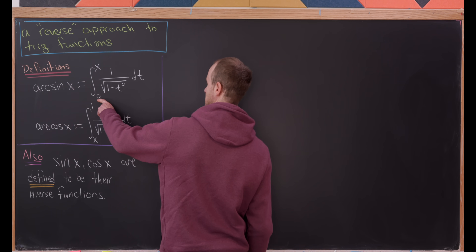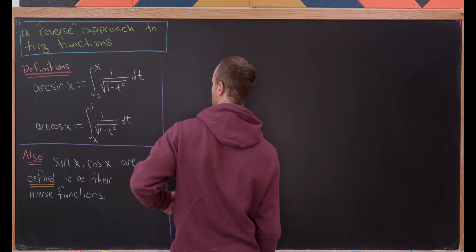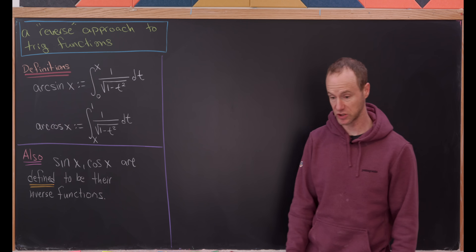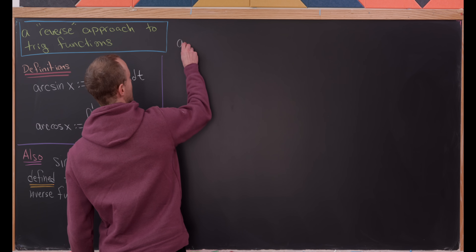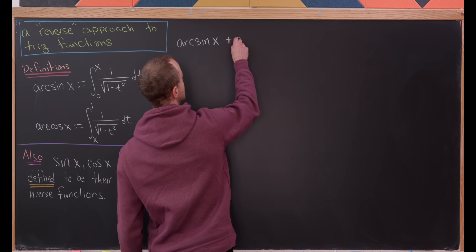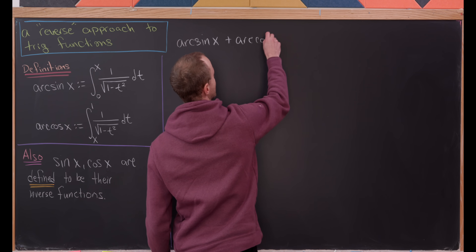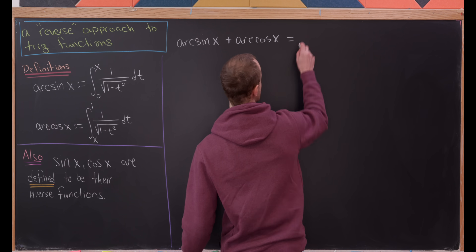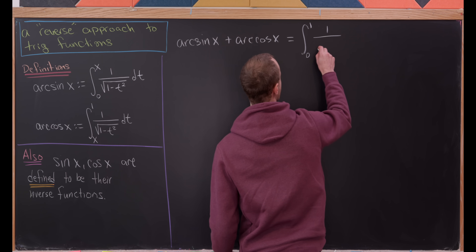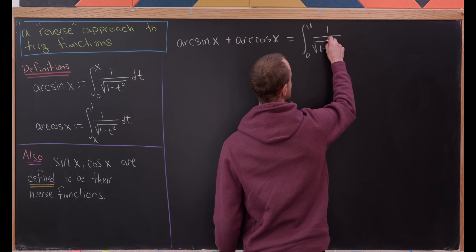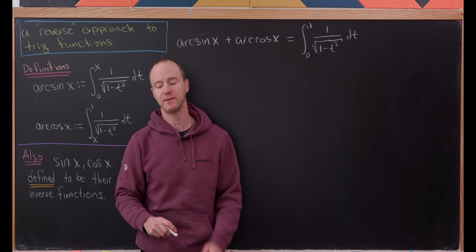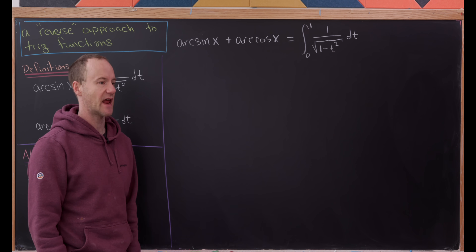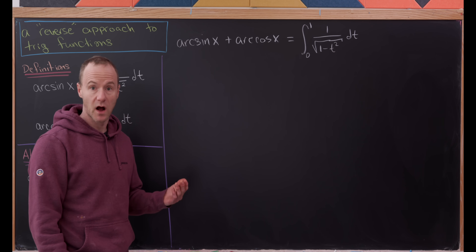Let's notice that arc sine of x is the integral from 0 to x of 1 over the square root of 1 minus t squared. Arc cosine of x is the integral from x to 1 of the same function. So that tells us that perhaps we should look at their sum. The sum of arc cosine of x and arc sine of x patches these two integrals together to become the integral from 0 to 1 of 1 over the square root of 1 minus t squared dt. The right-hand side is a constant, simply because it represents an area under the curve. But what constant is it?